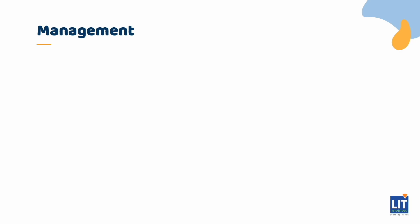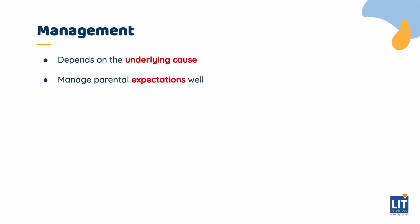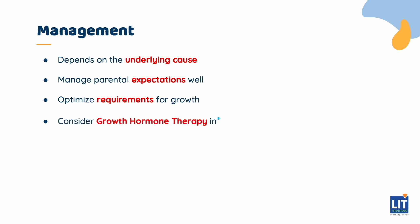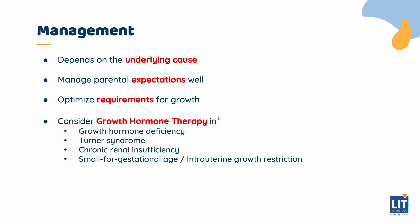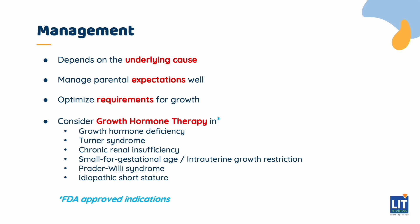Once you have performed the necessary investigations, a management plan is needed. If there is a specific pathology that needs to be addressed, then the management must deal with that. In the absence of abnormal results, it is also vital to discuss with the parents their expectations, as well as to attempt to optimize the child's requirements for growth, such as adequate and appropriate nutrition, enough sleep, and exercise. Growth hormone therapy can be considered in certain conditions. While these indications are FDA approved, there are also other conditions that have been treated with growth hormone.